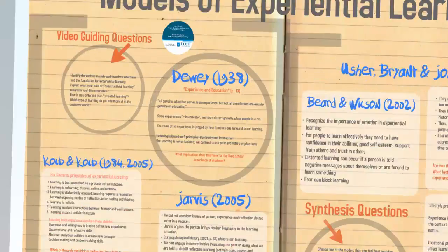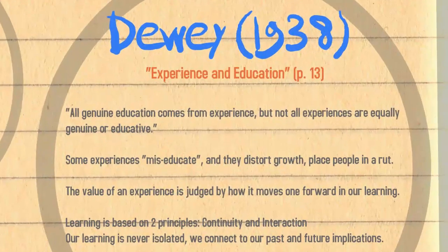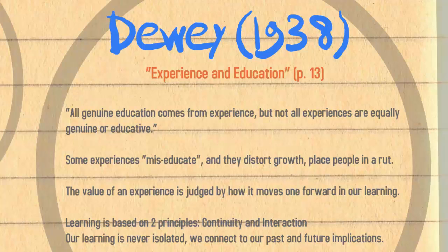Beginning with Dewey, who wrote Experience and Education. He is considered to be the father of modern education, and he said that all genuine education comes from experience. But not all experiences are equally genuine or educative. Some experiences miseducate and they can distort our growth and place people in a rut. The value of an experience is judged by how it moves one forward in learning. And if you think back to the motivation video, it really is up to us to choose how we take an experience — how we respond to what happens to us really decides our path.